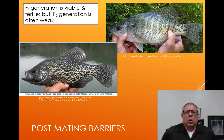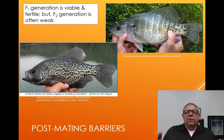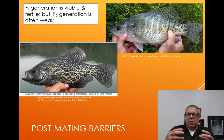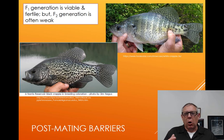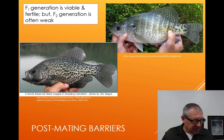Back to our crappie — another example. Not only do they spawn at different temperatures, which is a pre-mating isolating barrier, but also if they do happen to spawn, the F1 generation is viable and fertile. But if those F1s breed with each other, the F2 generation is often weak. There's some chromosomal incompatibility that keeps them from producing viable, fertile offspring and helps isolate the species. In this example, it's a post-mating barrier.